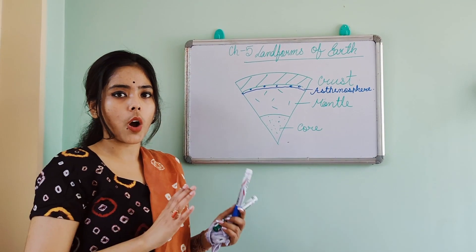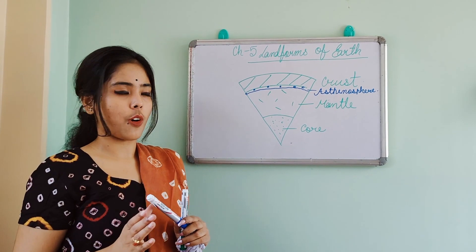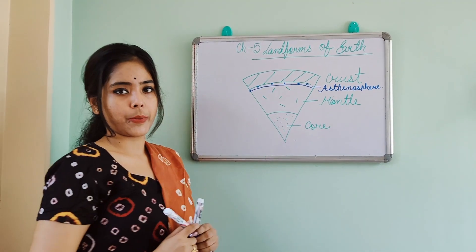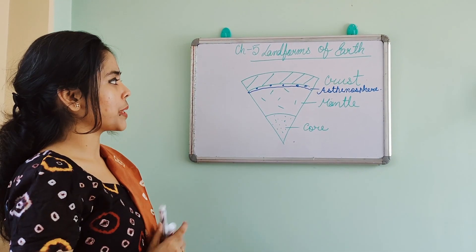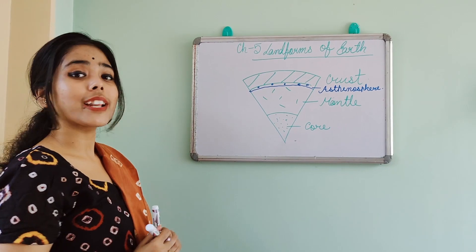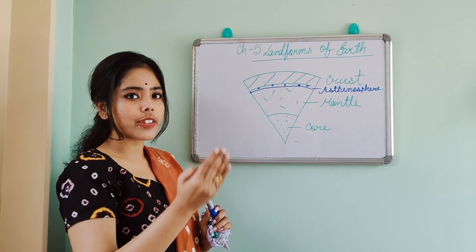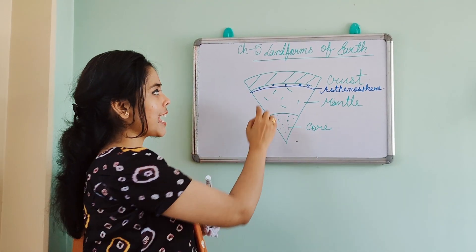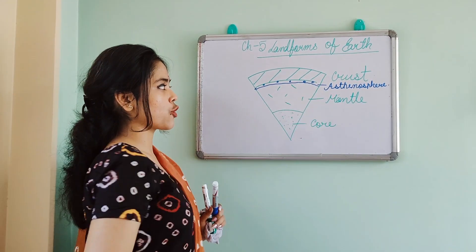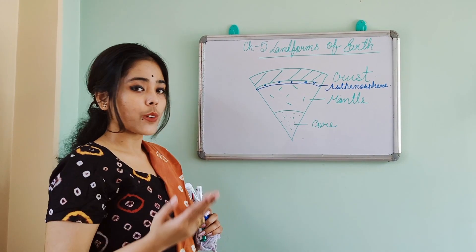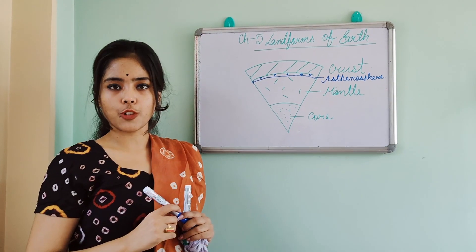Jelly means which is not so hard and not so in liquid form — that is the asthenosphere. If you look at the picture, you can easily see that our crust, or the surface of the earth, is just above this asthenosphere. You can see that the crust is floating on the asthenosphere.